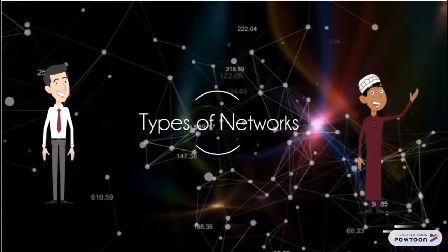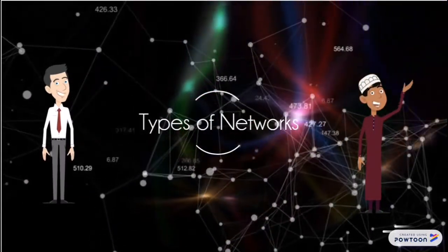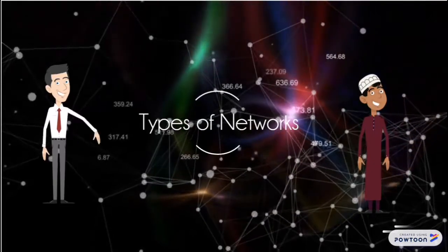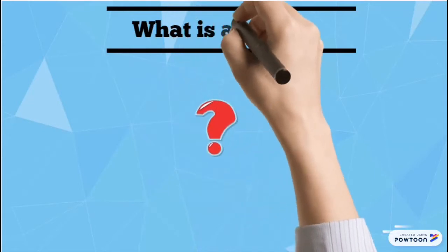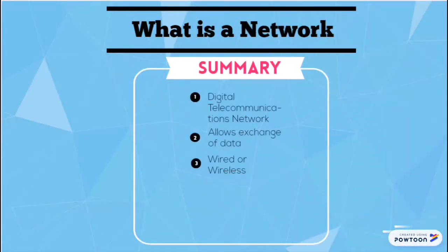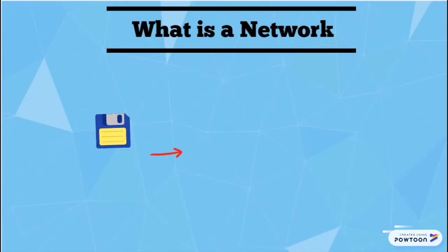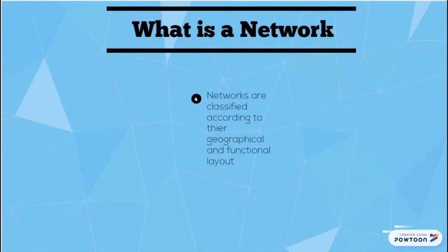Today we are going to present to you the types of networks, by Mamoun Khan and Rahsaan Ryan. A network is a digital telecommunications network which allows different devices to exchange data with one another. It can be through wired or wireless. Networks are classified according to their geographical and functional layers.